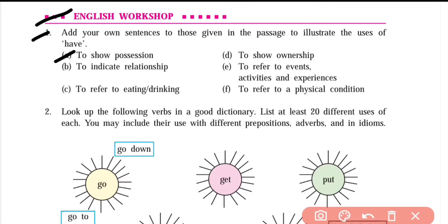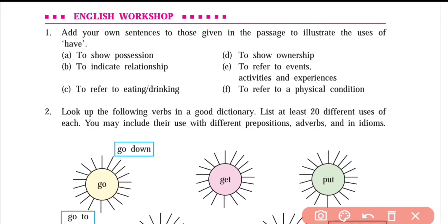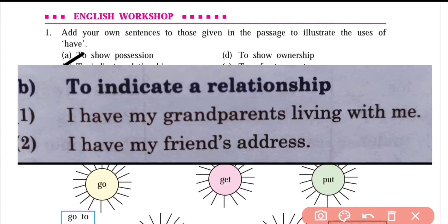The first use (A) is to show possession — its answer is in front of you, take it. B: To indicate relationship — its answer is in front of you.